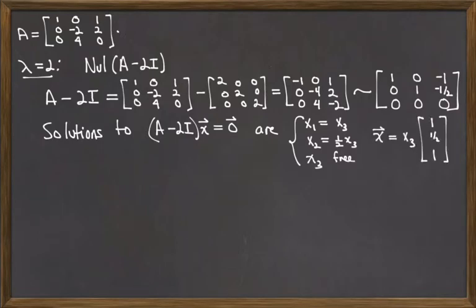In vector notation, my solutions are x3 times the vector 1, 1 half, and 1.